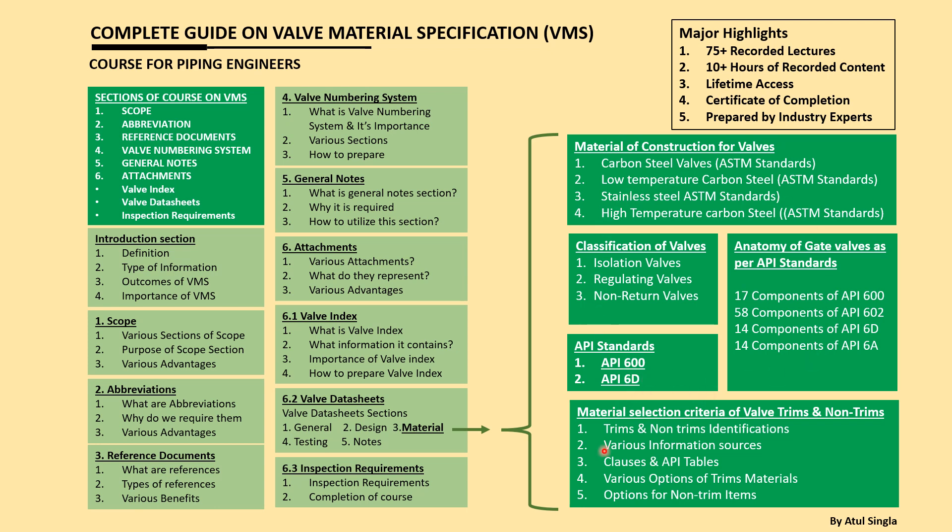Then we'll talk about the material selection criteria. We'll look into trims — what kind of trims are there — and what kind of non-trim items are there. We'll visualize these in a dissection diagram of a valve, seeing the various trims and non-trims, how they look, how they are located, and how they are associated with each other. Then we'll talk about various sources of information — whether from process, metallurgy, licensor, vendor, or any other discipline.